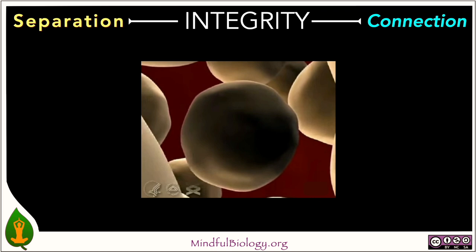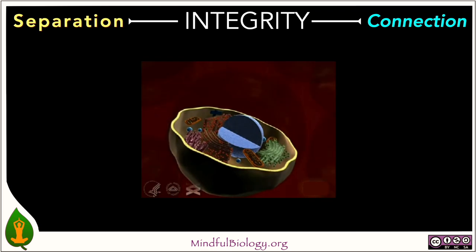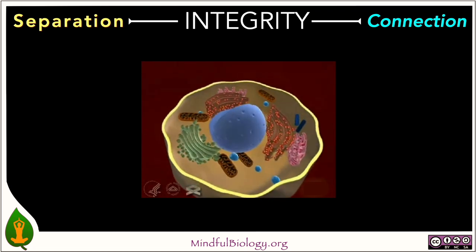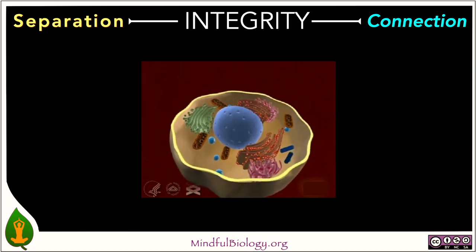Integrity is important all the way down to the basis of life. We're looking here at a simple diagram of a single cell. As we animate it and look inside, we notice that there is a lot of structure within. These are proteins and other macromolecules that are vital to the cell's survival. There is a need for the interior to be separated by a boundary so that what is important is kept within and what is dangerous is kept out. At the same time, the cell needs to be connected with its surroundings so that it can bring in nutrients and water, and expel waste and signals to other cells.